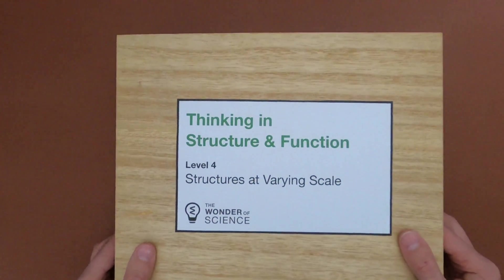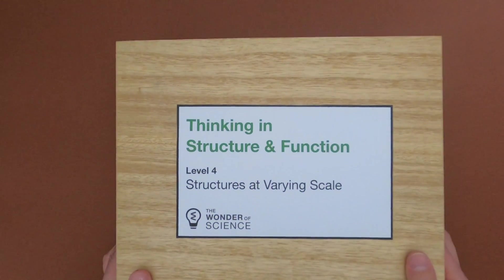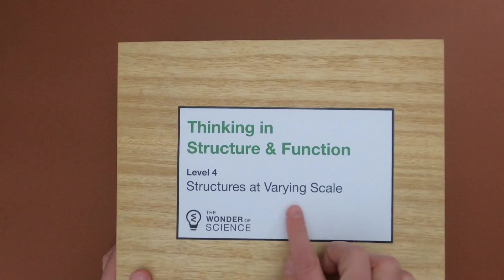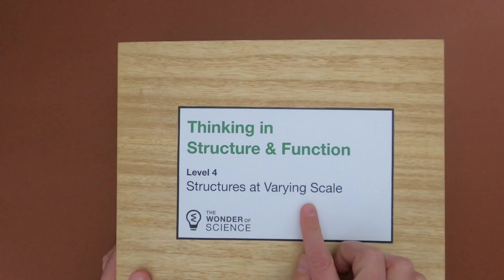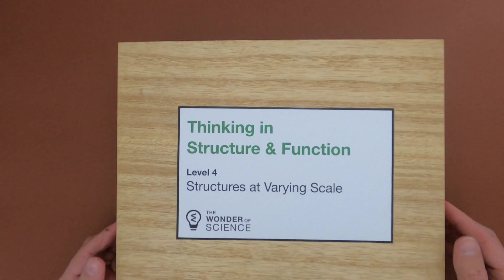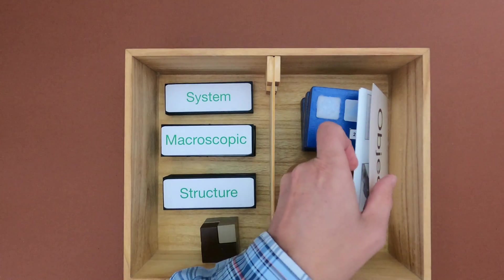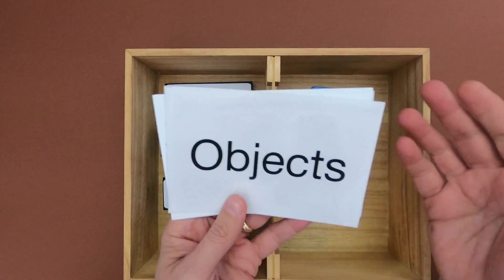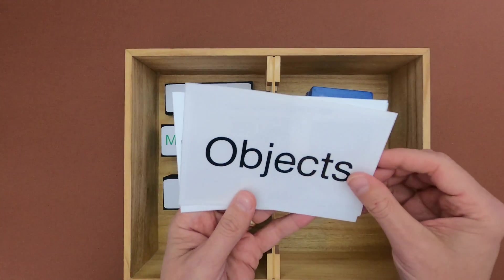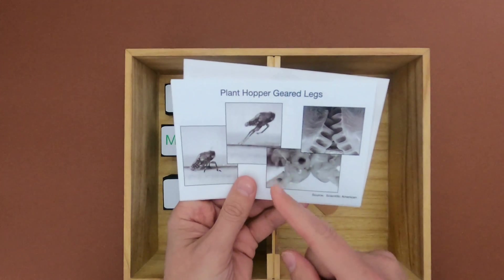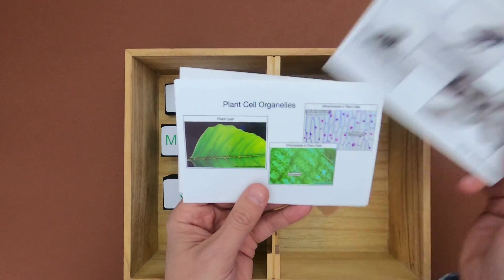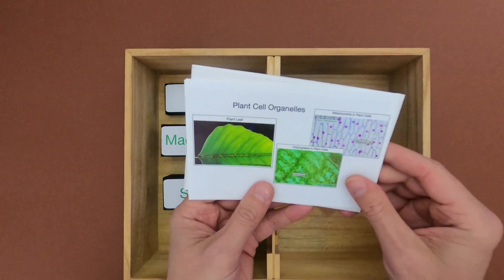Hi, it's Mr. Andersen and this is Thinking in Structure and Function, Level 4: Structures at Varying Scale. The scale we'll move between today will be macro and microscopic. After watching this video you should be able to identify structures and functions at varying scale — in something like the amazing plant hopper with geared legs, or the organelles of a plant cell.